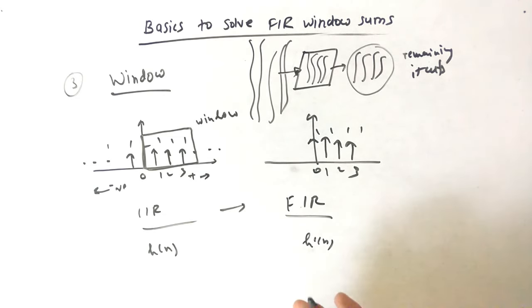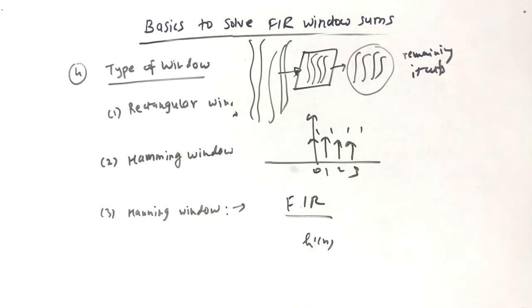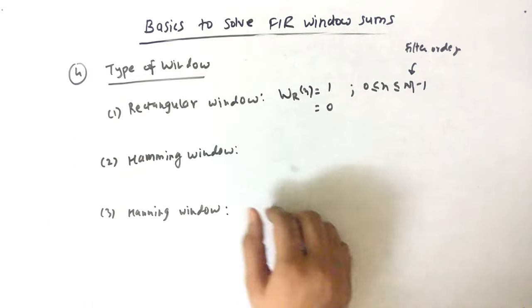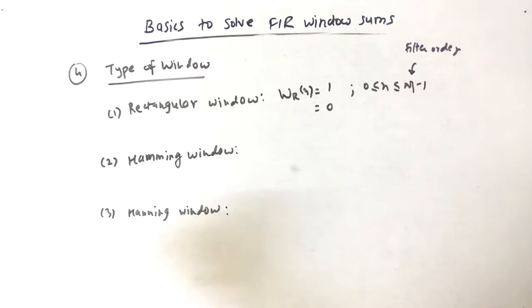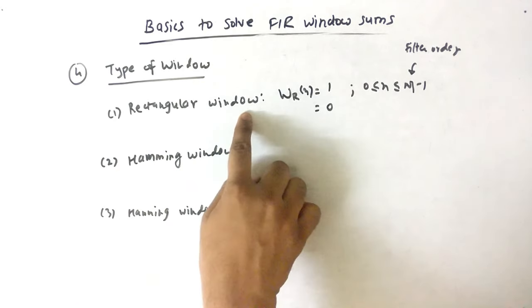Now let's see how many windows are available. So the fourth point is types of window. Basically there are 3 important windows that we should learn. The first type is rectangular window.